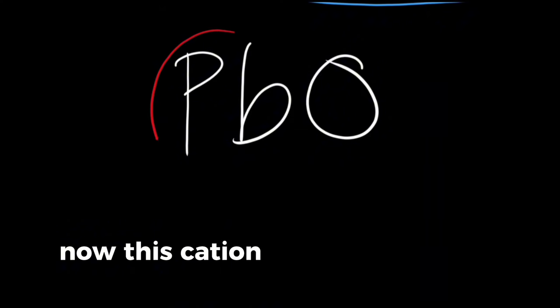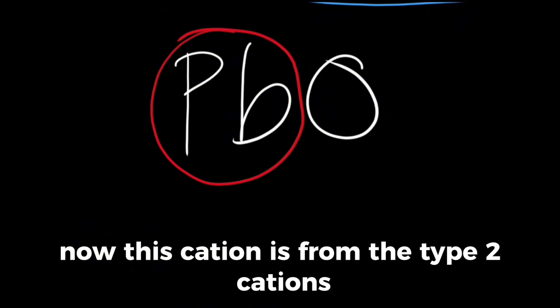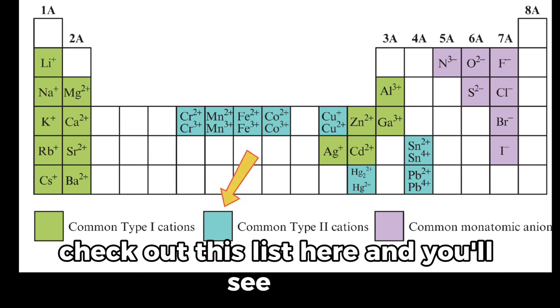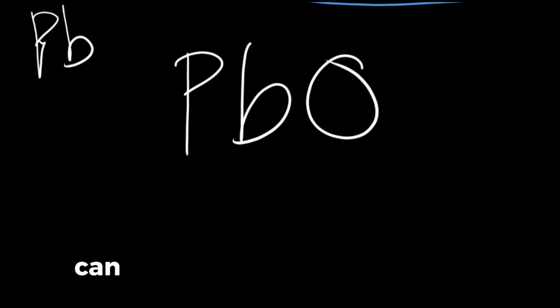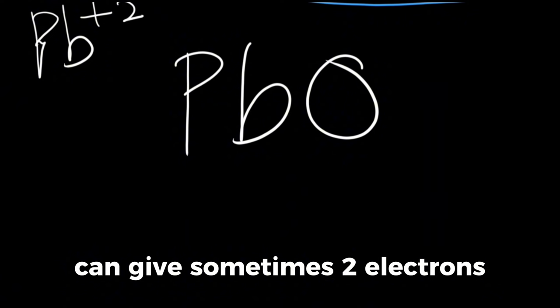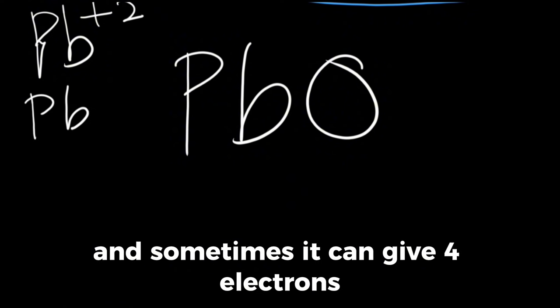For example, you have here PbO. How can we name this? This cation is from the type 2 cations. Check out this list here and you'll see that. So why is it from type 2? Because lead can give sometimes two electrons and sometimes it can give four electrons.